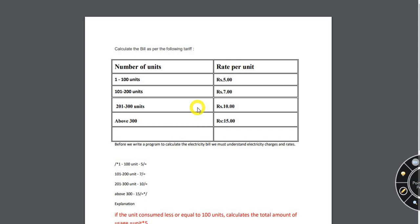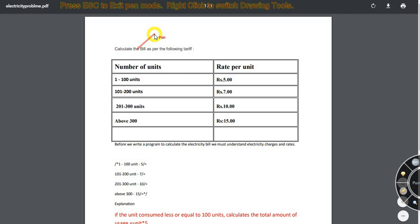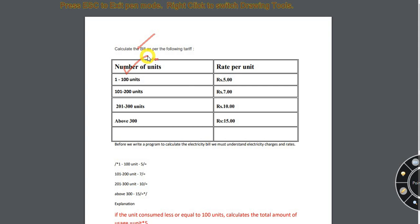Hello everyone, welcome to Coding Hub. Today I have come with a new if-else programming question based on electricity bill. We are going to calculate the amount of bill to be paid depending upon the number of units consumed by the customer. If the unit lies between 1 to 100, the rate is ₹5 per unit; 101 to 200 is ₹7; 201 to 300 is ₹10; and above 300 it is ₹15 per unit.